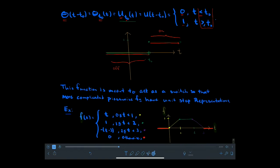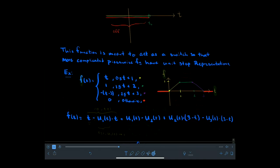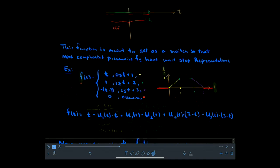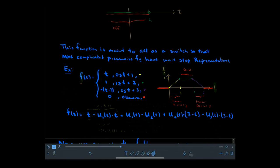Using this function I can create more elaborate piecewise functions. Here is a function f of t: it is zero outside certain intervals; from zero to one second it is linearly increasing; from one to two seconds it is constant; from two to three seconds it is linearly decreasing; and the rest of the time it is zero. We have the symbolic piecewise definition and the graphical version — now let's represent it using unit step functions.